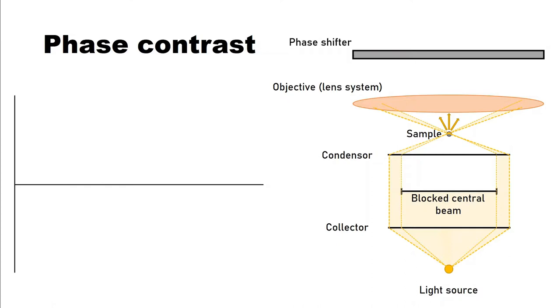But now, how is a phase contrast image created and what does the phase shifter do? Let's take a close look at what happens to the light when it passes through the sample. First, we have light waves that are not really affected by the sample. That is light from the surrounding, for example.